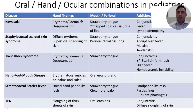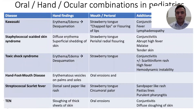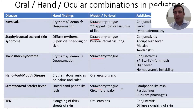One thing not to get caught up on is that the presence of strawberry tongue is not specific for Kawasaki disease. Strawberry tongue can also be seen in staphylococcal scalded skin syndrome, toxic shock syndrome, and streptococcal scarlet fever. So you need a good knowledge base about other diseases and their distinguishing findings.